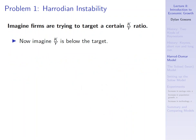The first problem is Harrodian instability, named after Roy Harrod — and in fact, Domar doesn't have this in his model. Imagine firms are trying to target some ratio of capital to output, because they need some amount of capital to produce output and are trying to target that amount of capital for any given amount of output. Now imagine that that capital-to-output ratio is below the target, below what they need. Well, then the firm will invest — increase investment — to try to hit this K/Y ratio.